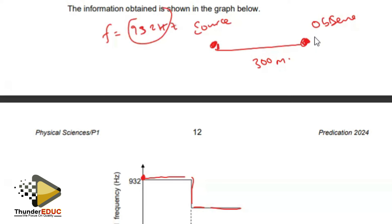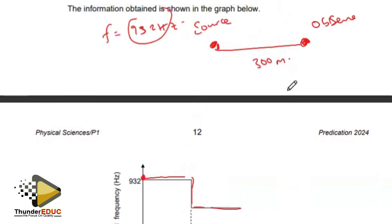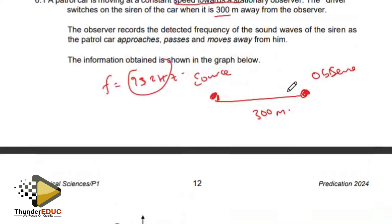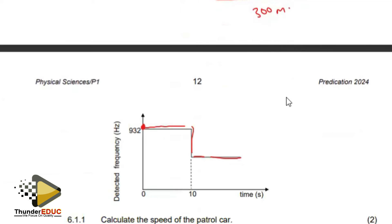How do we get the velocity of the car? Which formula can we use? Do we have the time? There's no time. What else do we have? Yeah, we have this 10. Yeah, 10 seconds, so this 932 is going to last for 10 seconds.